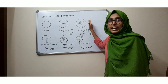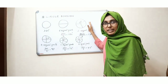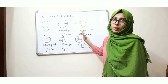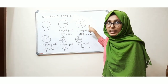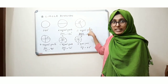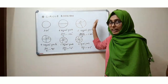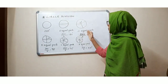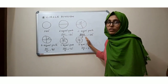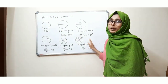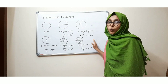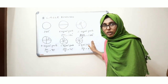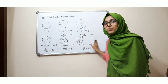Now a circle is divided into three equal parts. A full circle is of 360 degrees. We have divided that into three equal parts, so 360 divided by three equals 120 degrees. So one part will be of 120 degrees.